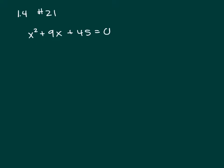Before you can complete the square, you've got to make sure that there's a 1 on your x squared. Here, that is a 1, so we're in good shape. But if it wasn't, we'd have to factor that coefficient out. So before you can complete the square, you've got to have just an x squared.